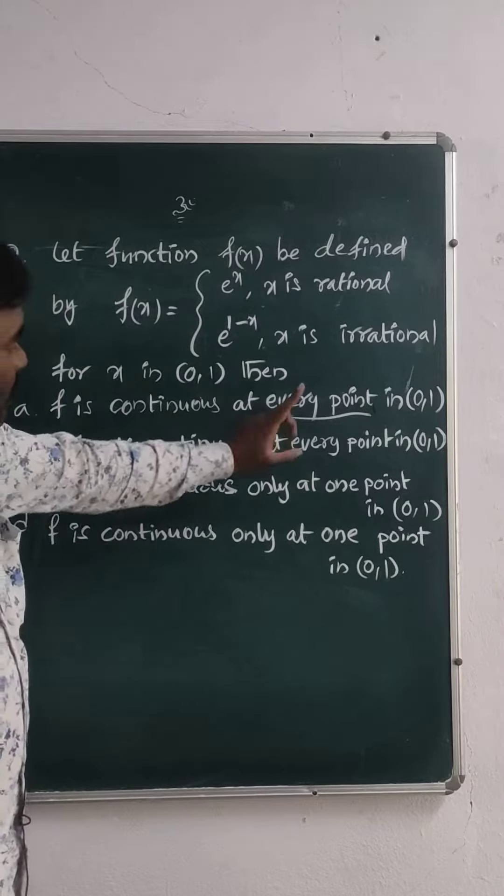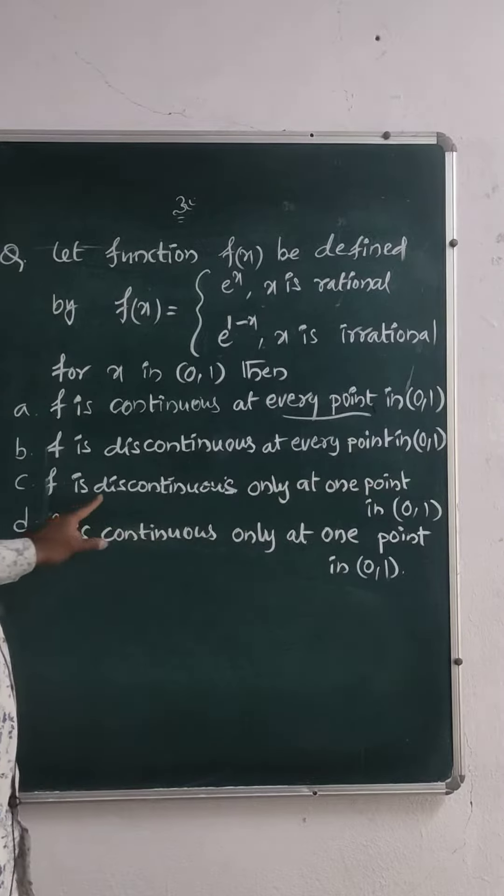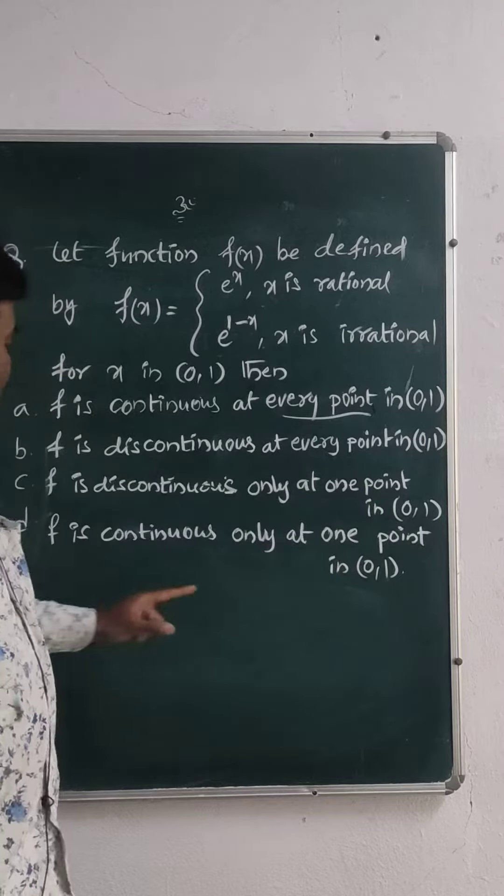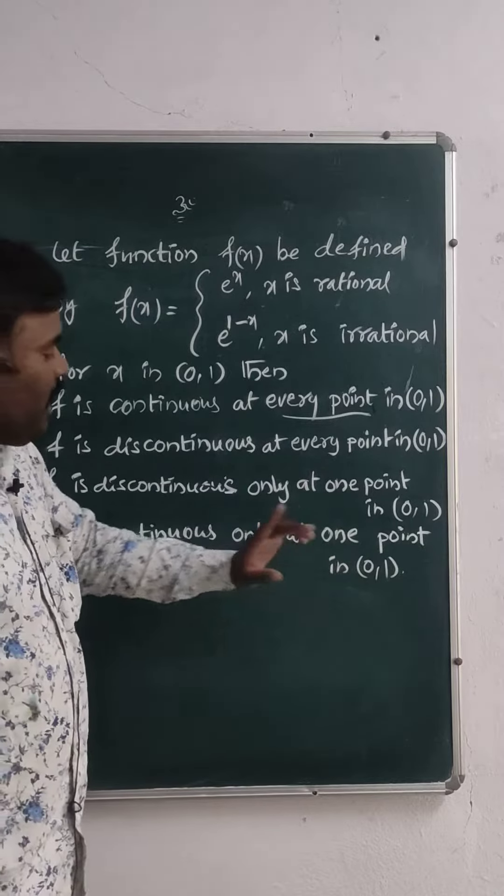Then f is: (a) continuous at every point, (b) discontinuous at every point in the interval, (c) discontinuous only at one point in the interval, (d) continuous at only one point in the given interval.